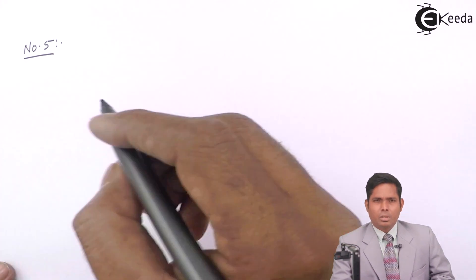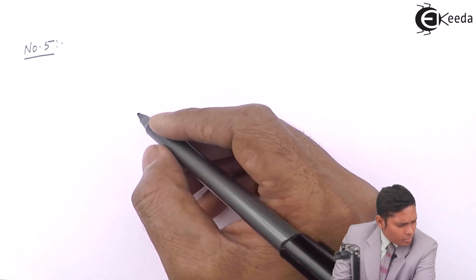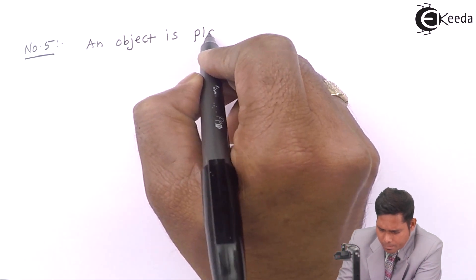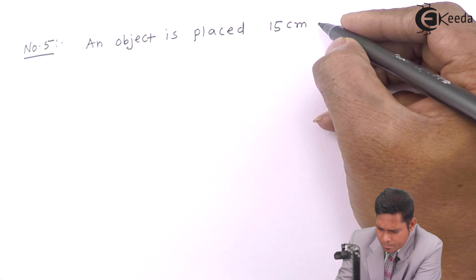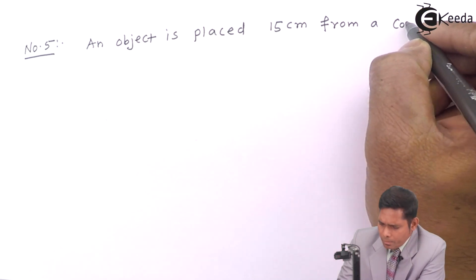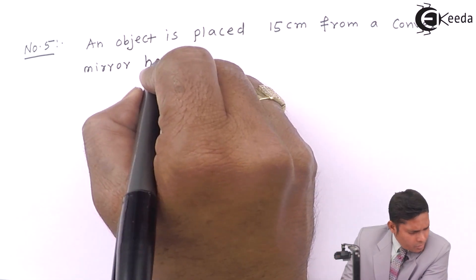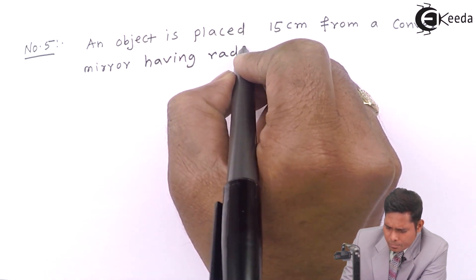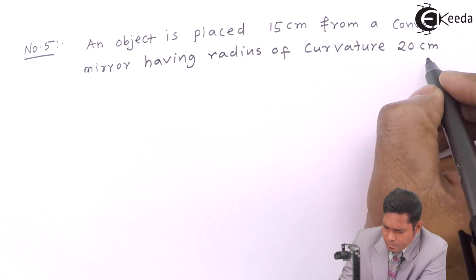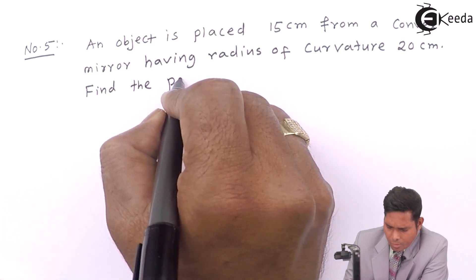Let us consider the mirror. The question goes like this: an object is placed 15 cm from a convex mirror having radius of curvature 20 cm. Find the position and kind of image formed by it.